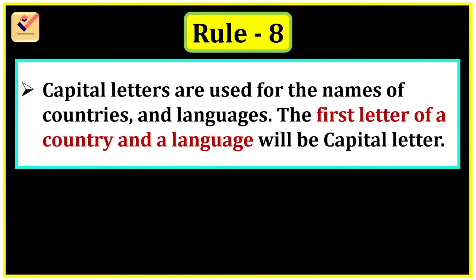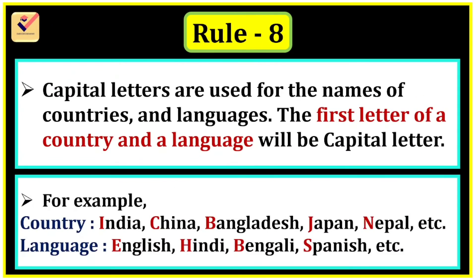Rule 8: Capital letters are used for the names of countries and languages. The first letter of a country and a language will be capital. Countries: India — I is capital; China — C is capital; Bangladesh — B is capital; Japan — J is capital; Nepal — N is capital. Languages: English — E is capital; Hindi — H is capital; Bengali — B is capital; Spanish — S is capital.